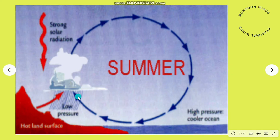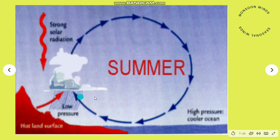This onshore flow is continually supplied by cooler oceanic air sinking from higher levels in the atmosphere. In the upper atmosphere, the rising continental air is drawn outward over the oceans to replace the sinking oceanic air, thus completing the cycle.